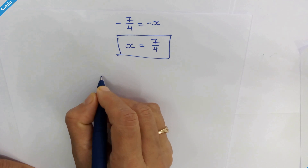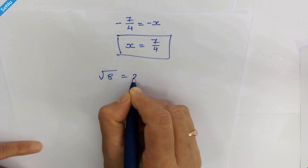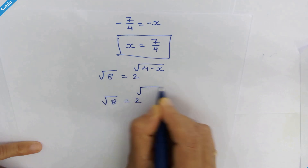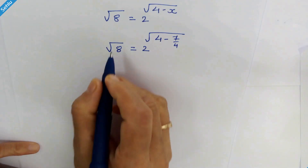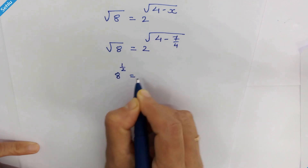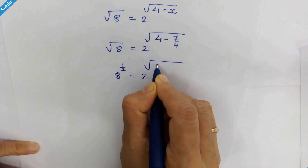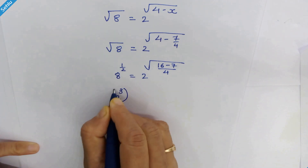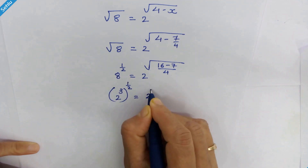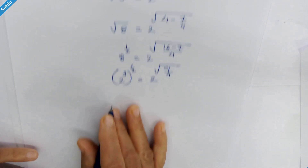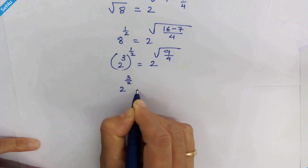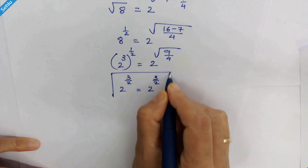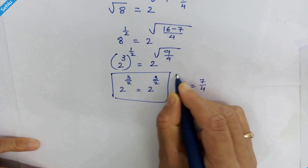Let's check this answer. Putting the value of x: square root of 8 is 8 raised to 1 upon 2, equal to 2 raised to square root of (16 minus 7) upon 4. Since 8 is 2 cubed, this becomes 2 raised to square root of 9 upon 4, which is 2 raised to 3 upon 2. So x equals 7 upon 4 is confirmed as the correct answer.